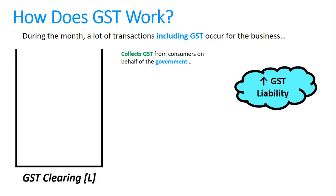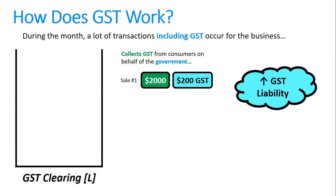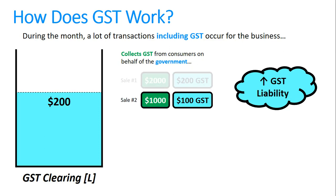When the business collects that money for the government, it doesn't belong to the business. For example, if we make a sale of two thousand dollars plus two hundred dollars GST, that two hundred dollars doesn't belong to us — it belongs to the government, increasing our liability to two hundred dollars. A second sale of one thousand dollars plus one hundred dollars GST brings the total liability to three hundred dollars.